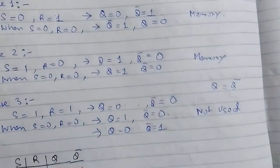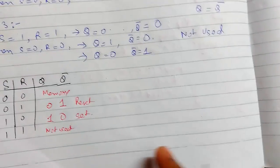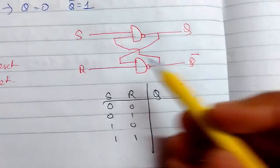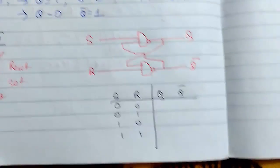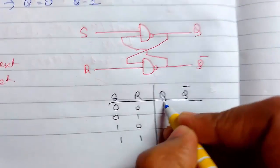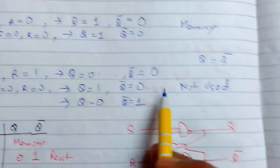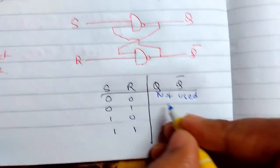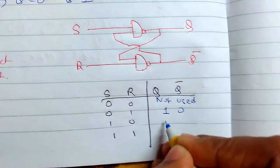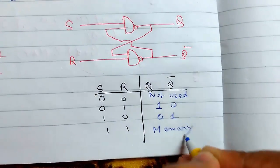This was SR latch using NOR gate, so I will show you how to do it by NAND gate. This is our SR latch using NAND gate, the set and reset gets changed. The truth table for it will be just the opposite. 0, 0 is our not used condition, 0, 1 is our set condition, 1, 0 is our reset condition and 1, 1 is our memory condition.